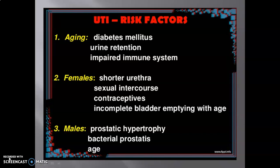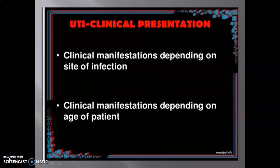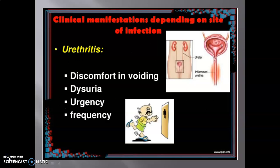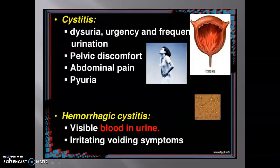Clinical manifestation depends on site of infection and age of patient. At the site level: urethritis presents with discomfort in voiding, dysuria, urgency, and frequency. Cystitis presents with dysuria, urgency, frequent urination, pelvic discomfort, abdominal pain, and pyuria.